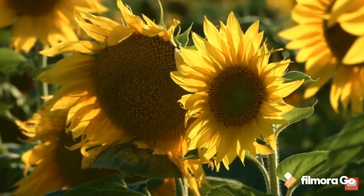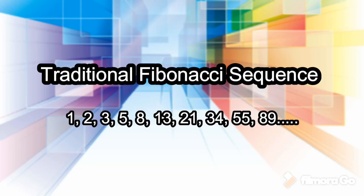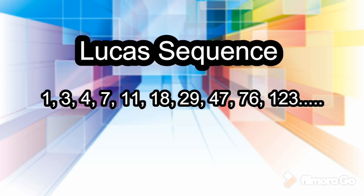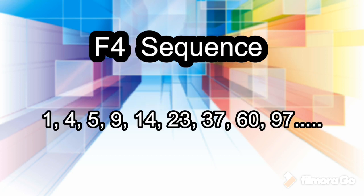But that wasn't all. The traditional Fibonacci sequence starts with 1 and 2, giving: 1, 2, 3, 5, 8, and so on. But you could also start with 1 and 3, getting the Lucas sequence: 1, 3, 4, 7, 11, and so on. Or you could start with 1 and 4, getting the sequence known as F4: 1, 4, 5, 9, 14, and so on.